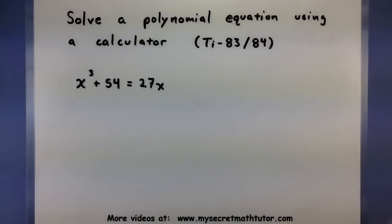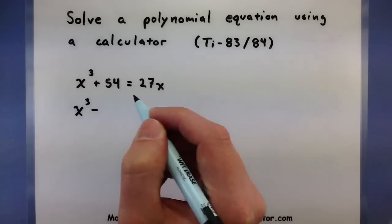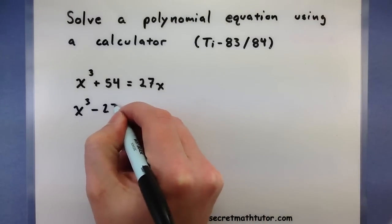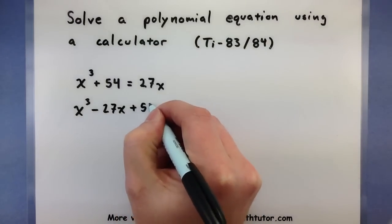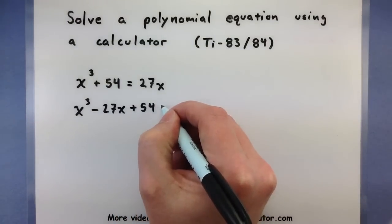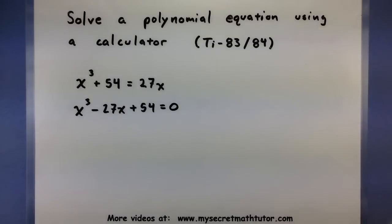So the equation that I want to solve is x cubed plus 54 is all equal to 27x. To make this process a little bit easier, make sure you get everything over onto one side so that it is equal to 0. So I will subtract 27x from both sides, giving me x cubed minus 27x plus 54. This is what we want to put into our calculator.